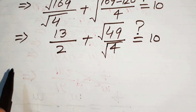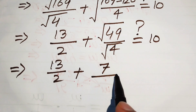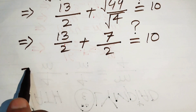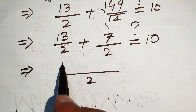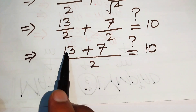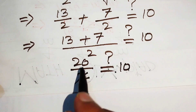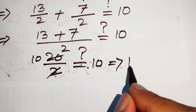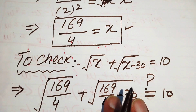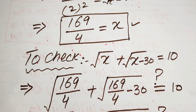We have 13 over 2 plus the square root of 49 over the square root of 4. Since square root of 49 equals 7 and square root of 4 equals 2, this is 13 over 2 plus 7 over 2. Taking the LCM of 2 gives (13 plus 7) over 2, which is 20 over 2 equals 10. So left hand side equals right hand side, confirming that x equals 169 over 4 is the only solution of this equation. Thank you so much for watching this video.